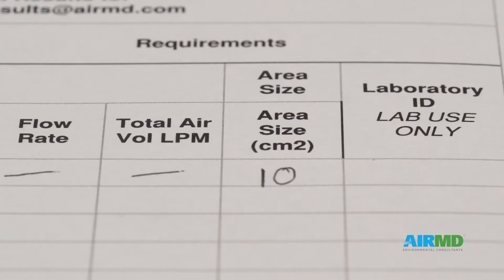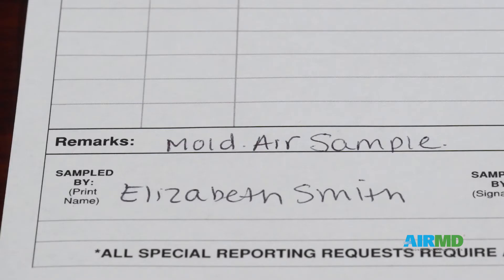The next section of the chain of custody is the area size section, which relates to the surface samples collected. The area where the surface sample was collected is notated. For example, a bacteria swab sample collected from a 10 centimeter squared area would have that area recorded in the section.